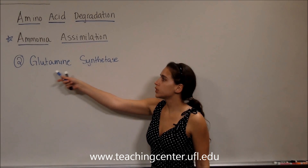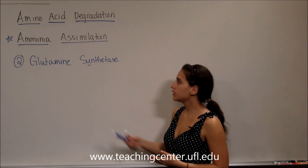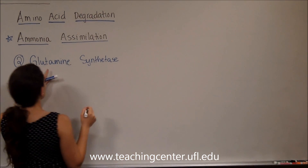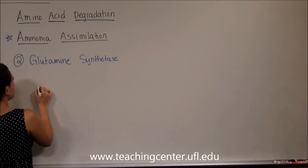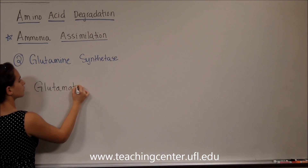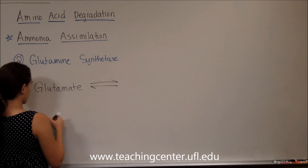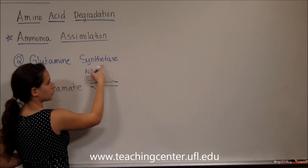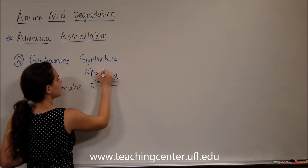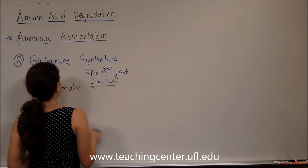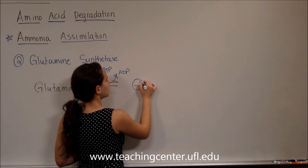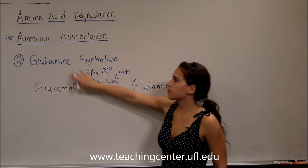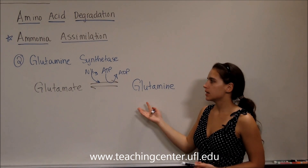Our second enzyme we'll be talking about is glutamine synthetase, so we're going to be making glutamine. The synthetase tells us that we're going to be using ATP to do that. We're going to make glutamine from glutamate, and because we're assimilating ammonia, we are going to add ammonia to glutamate. Because we're using a synthetase, we're going to use ATP, and we're going to be making glutamine. If you can remember that it's a synthetase and that we're making glutamine, this reaction is going to be pretty simple to remember.